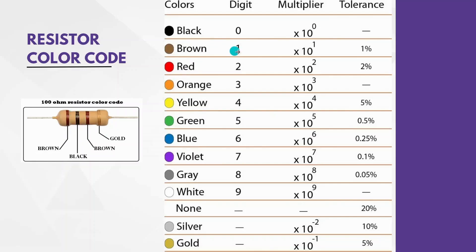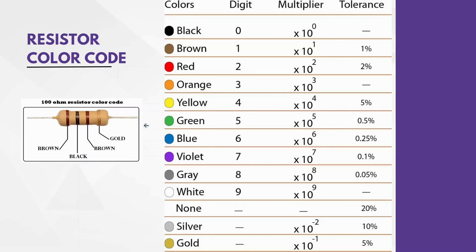Color brown means digit 1, color black means digit 0, which means it is 10. Multiplier means we multiply that with the digits. So 10 into — color brown has a multiplier of 10 raised to 1, which is 10. So 10 into 10 is 100. And gold has a tolerance of 5% if you look at the table. So we say this is a 100 ohm resistor. Like this, we find the resistance of the resistor by just looking at the color bands.